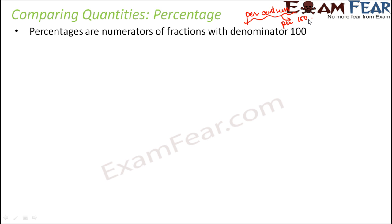So when we talk about percentage, these are fractions where the denominator is always going to be 100, because we are talking about how much out of 100. The denominator would always be 100 and the numerator could be anything. Percentage is denoted by this symbol — this is the symbol for percentage.